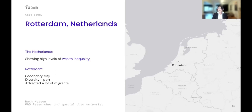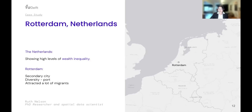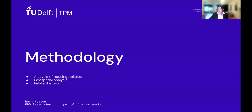Rotterdam is the second largest city in the Netherlands, has the largest port in Europe, and is very diverse — actually labeled a hyper-diverse city. During the 20th century it attracted a range of migrants: after World War II, to rebuild the city and port, the Netherlands encouraged migrants from Turkey and Morocco, former colonies, making it also an interesting case from that perspective.